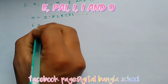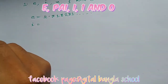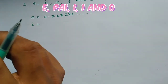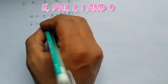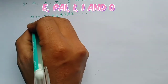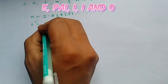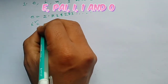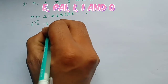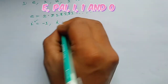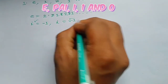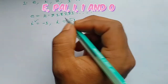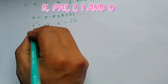Next, i. i is called an imaginary number — kalpunik shankha. The value of i is defined as: i squared is equal to minus 1, and i is equal to the square root of minus 1. This is the value of i.